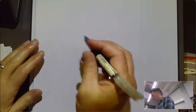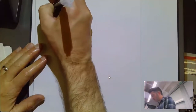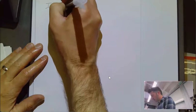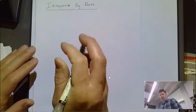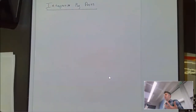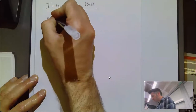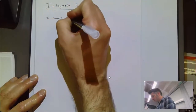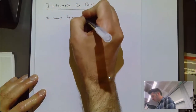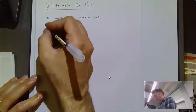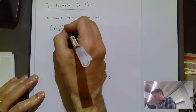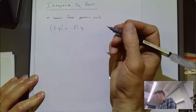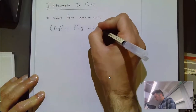It's worth knowing where integration by parts comes from. It actually comes from the product rule, which is kind of interesting. The product rule says that if you take the derivative of f times g, it's the derivative of f times g plus f times the derivative of g.